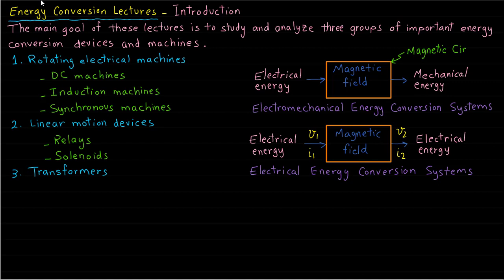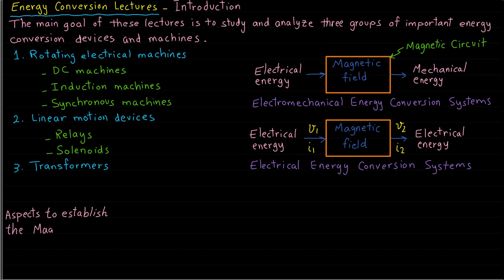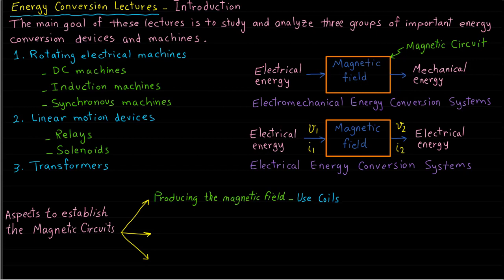The magnetic circuit works as an interface between the input energy and output energy. There are three aspects to establish the magnetic circuits or the magnetic field. The first aspect is producing the magnetic field. In most electrical machines, the magnetic field is produced by using a coil and passing electrical current. In some types of machines, magnetic fields are produced by using permanent magnets.